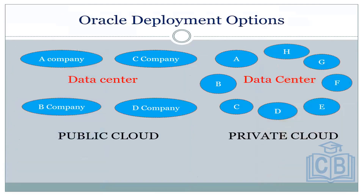Deployment options — Oracle deployment options: we have a public cloud and we have a private cloud. Public cloud is where we have Company A, Company B, Company C and Company D, deploying your cloud application in different data centers.